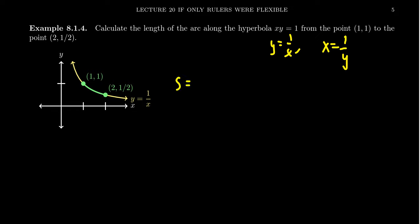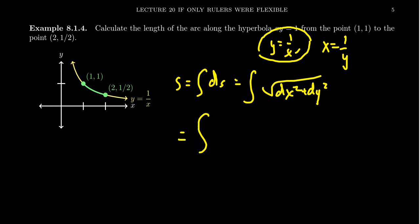Remember, s the arc length is equal to the integral of ds. This is the integral of the square root of dx² + dy². Because of the symmetry of the arc length formula, we can comfortably integrate with respect to x or y. I'm going to choose to integrate with respect to x just because that's the format we're more used to.